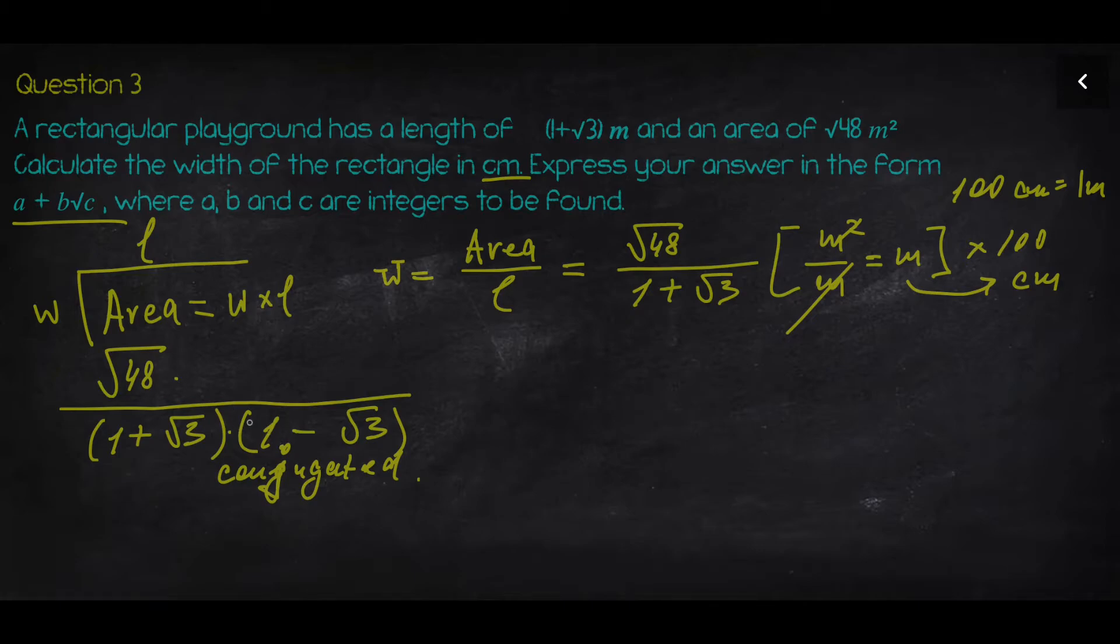Because we multiply the bottom part, we need to multiply the top part as well. This procedure will allow us to rationalize the denominator because if we have a look at the bottom part, you'll recognize the formula. This is the difference of two squares: a²-b². In this case, it's 1²-(√3)² which is 3, and finally you get -2 in the bottom part.